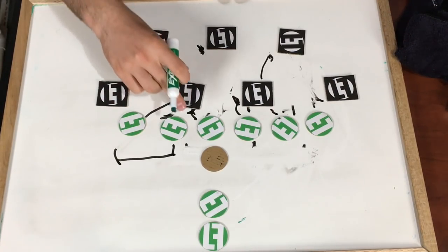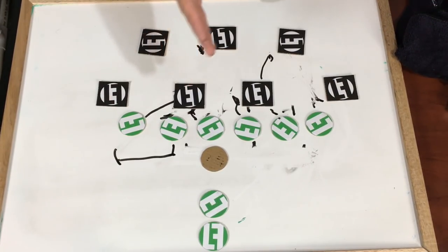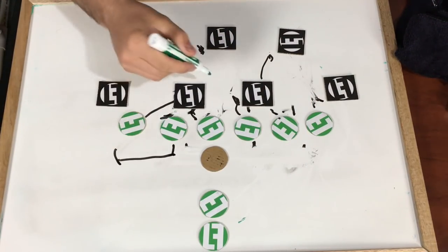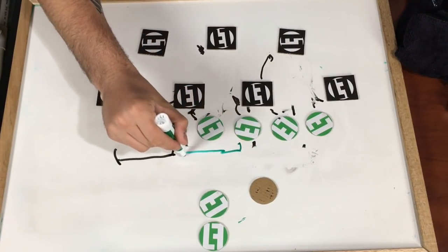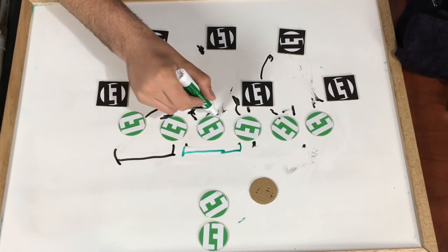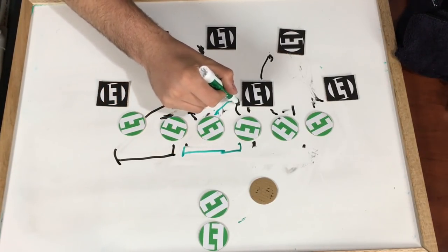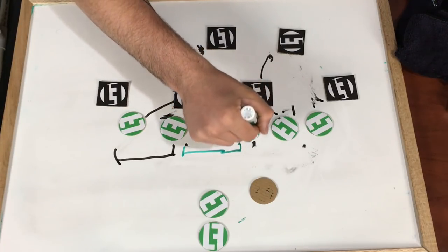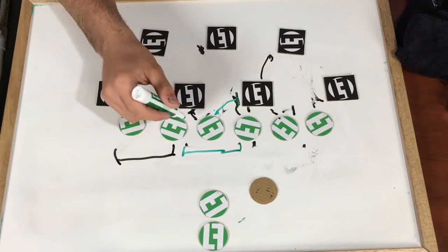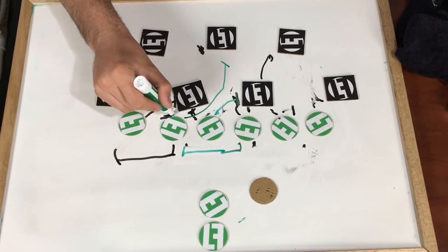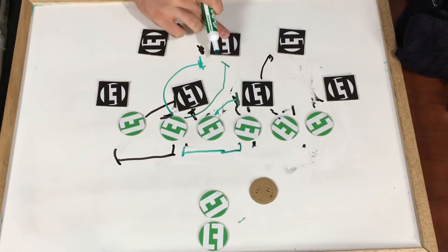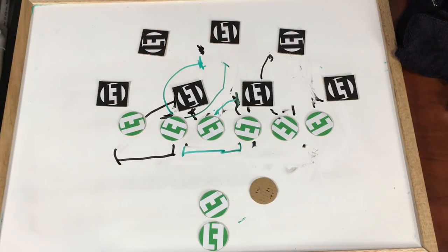For inside trap, you always want to run it to the three technique side because he has an easier kick out. If we tried to run it to the one technique side, the center has to get all the way down to the three technique, who could easily just follow through. He has to leave the one technique over top of him, and going around makes it almost impossible to cut off the flowing linebacker. That's why you run to the strength side.